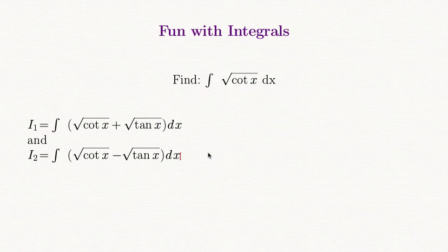So given i1 and i2 and our integral, let's give that also a name. Our integral is i3 which is equal to integral square root cot x dx.